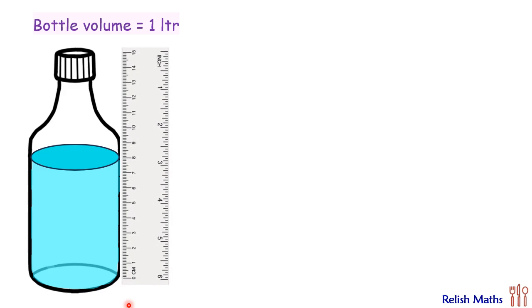Here the height of full bottle is 15 centimeter and the height of water column in it is 8 centimeter. Now this water is in shape of a cylinder, assuming that the radius of this cylinder is r centimeter.